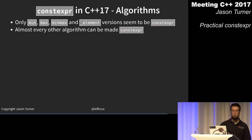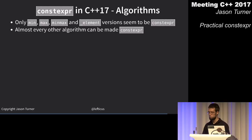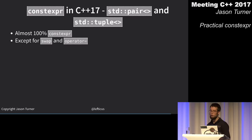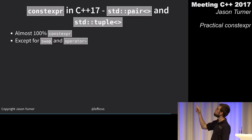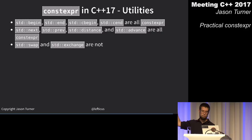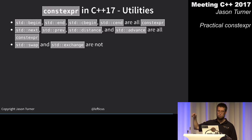optional and variant are not constexpr enabled but probably could be. pair and tuple are almost 100% constexpr except for operator= and swap. The utilities begin, cbegin, cend, next, prev, distance, and advance are all constexpr; swap and exchange are not.